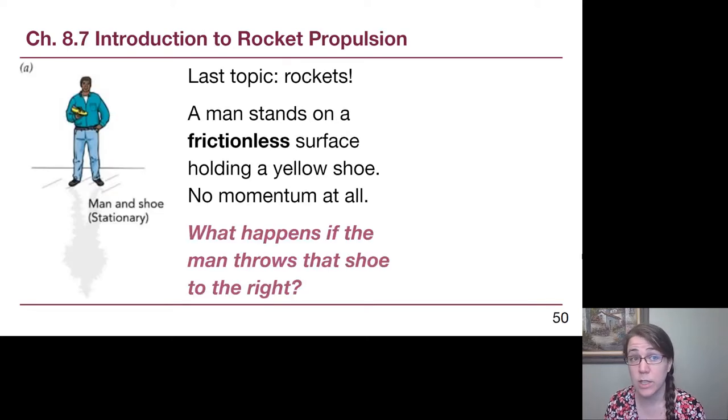That's it for that section. We move on to our last piece of the chapter, which is rockets. To introduce rockets, we have this man who has volunteered to stand on some ice and hold a yellow shoe. This is a quick check to see if we can think about what happens for rockets with a much simpler example.